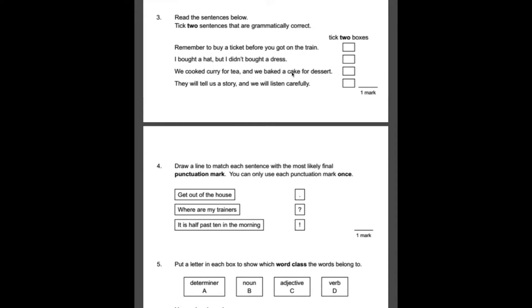Number three, read the sentences below. Tick two sentences that are grammatically correct. For these examples here, you'll notice that some of the sentences are split between two tenses. So for whatever reason, they start in one tense and then they end in a different tense, which doesn't make sense. So see if you can spot those two. The first one, remember to buy a ticket before you got on the train. I bought a hat but I didn't bought a dress. We cooked curry for tea and we baked a cake for dessert. They will tell us a story and we will listen carefully. So the two which are correct are we cooked curry for tea and we baked a cake for dessert. That's all in the same tense that makes sense. They will tell us a story and we will listen carefully. That's also the correct one there. The other ones don't make sense because remember to buy a ticket is present and as you got on the train is past and the second sentence as well doesn't make any sense.